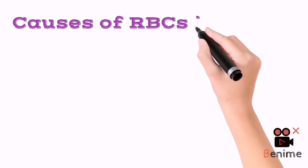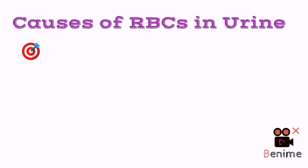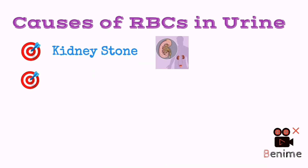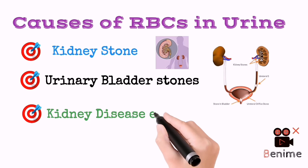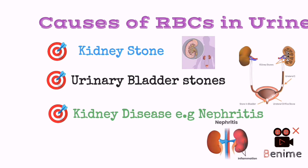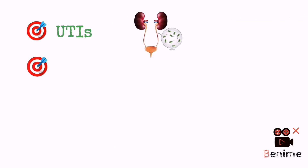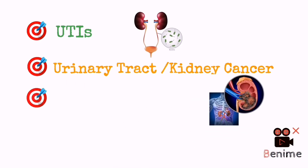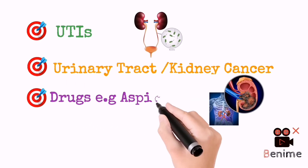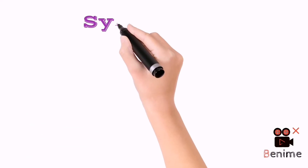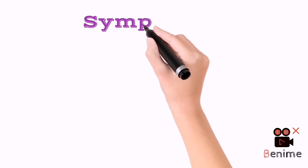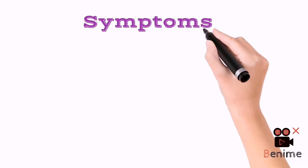Major causes of RBCs in urine include kidney stones, urinary bladder stones, kidney diseases like nephritis and glomerulonephritis, different UTIs, urinary tract or kidney cancer, and drugs such as aspirin, penicillin, heparin, etc.